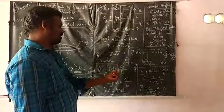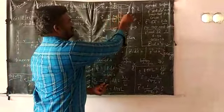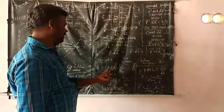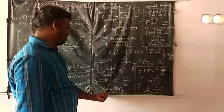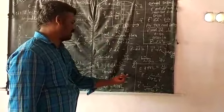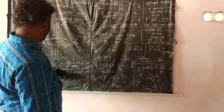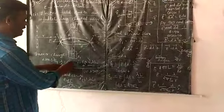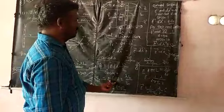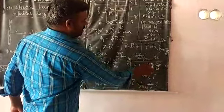By Gauss law, phi equals Q enclosed divided by epsilon-zero. The electric field E is constant on the cylindrical surface at distance R, so E can be taken outside the integral. The integral of dA over the curved surface gives the area of the cylindrical surface: 2 pi R L. So E into 2 pi R L equals lambda L divided by epsilon-zero. Cancelling L from both sides gives E into 2 pi R equals lambda divided by epsilon-zero.